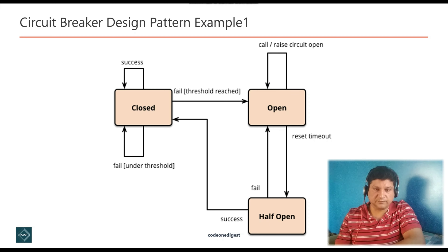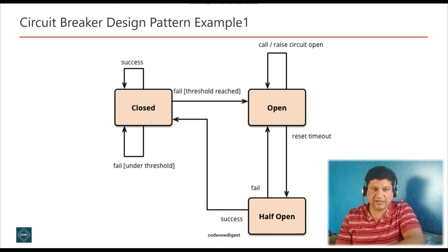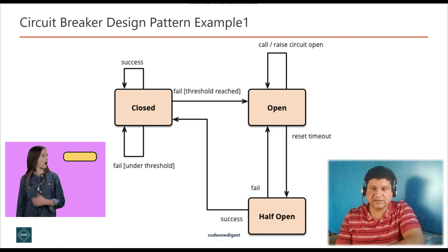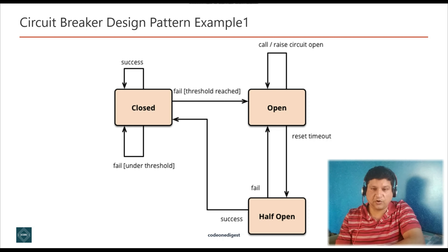The solution to this problem is the circuit breaker pattern. Circuit breaker pattern can prevent an application from repeatedly trying to execute an operation that is likely to fail, allowing it to continue without waiting for a fault to be fixed or wasting CPU cycles while it determines that the fault is long-lasting. The circuit breaker pattern also enables an application to detect whether the fault has been resolved. If the problem appears to have been fixed, the application can try to invoke the operation. A circuit breaker acts as a proxy for operations that might fail, monitoring the number of recent failures and using this information to decide whether to allow the operation to proceed or return an exception.